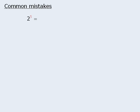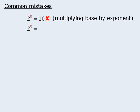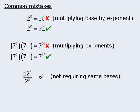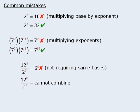Before we conclude this lesson, let's examine some common mistakes that students sometimes make, so we can avoid making these same mistakes ourselves. The first mistake is to evaluate a power by multiplying the base by the exponent. The correct way is to take our 2 and multiply it by itself 5 times to get 32. Another common mistake is to multiply the exponents when finding the product of 2 powers — the product law tells us to add the exponents. Another mistake is to apply the quotient law even though the two bases are not the same. To apply the quotient law, the numerator and denominator must have the same base, so we cannot combine them if the bases differ.